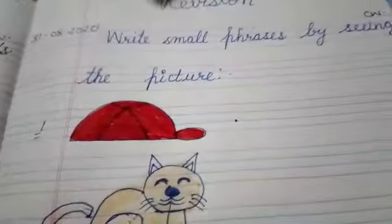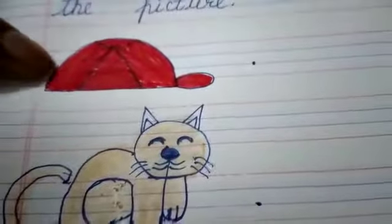There is a revision: write small phrases by seeing the pictures. Ma'am has drawn some pictures on the notebook. Like, what is it? Cap. And what is the colour? Red.